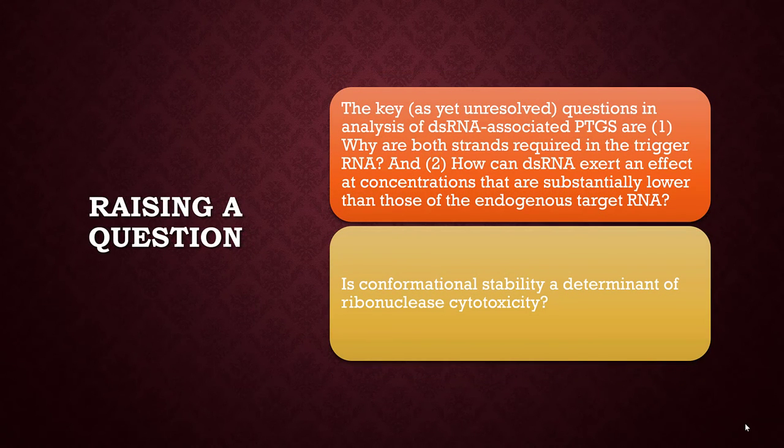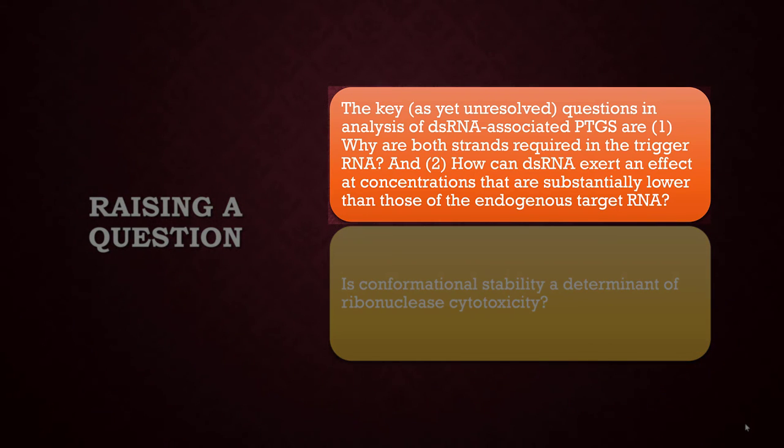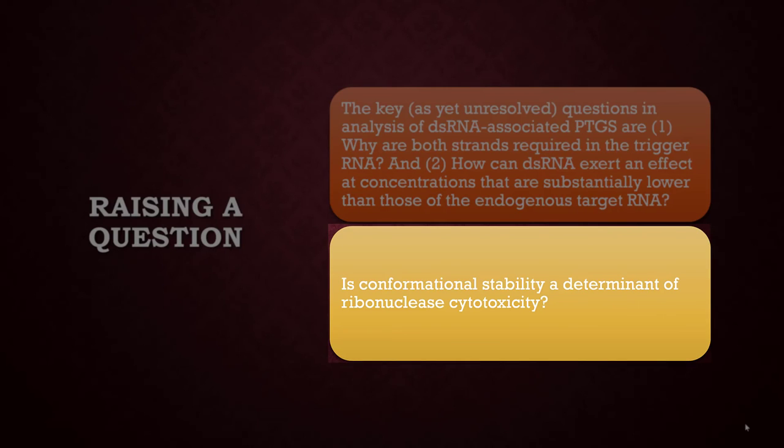Another way to argue for your unknown is simply to ask it as a question. These examples demonstrate this approach. 'The key, as yet unresolved questions in analysis of double-stranded RNA-associated PTGs are: 1. Why are both strands required in the trigger RNA? 2. How can double-stranded RNA exert an effect at concentrations that are substantially lower than those in the endogenous target RNA?'